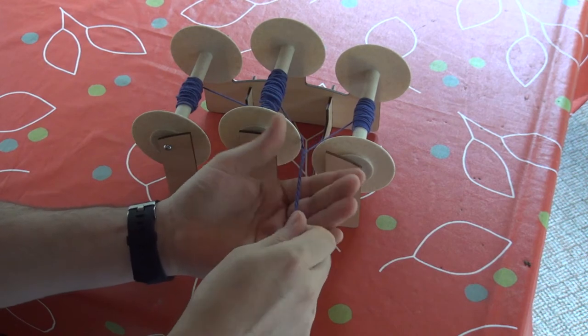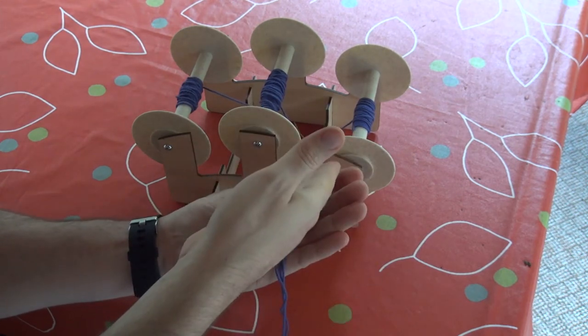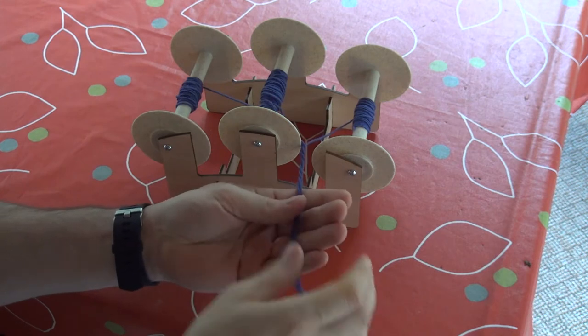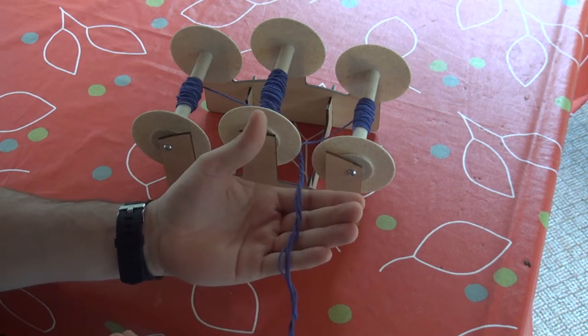do what is called plying the yarn together, and you'll end up with a thicker piece of yarn that has formed from multiple single strands.